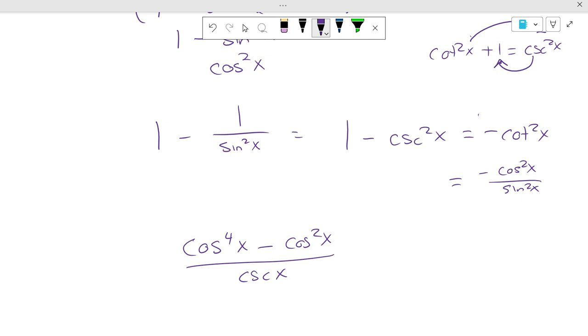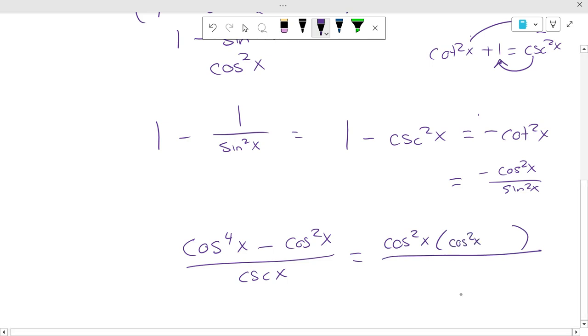Alright. What can we do? You can't subtract. They're not like powers. But we can factor. We can take out a cosine squared of x, and what's left on the inside? Cosine squared of x minus 1.